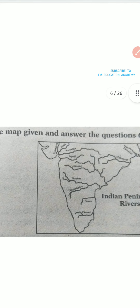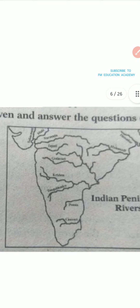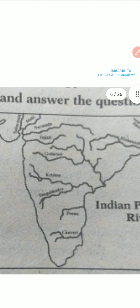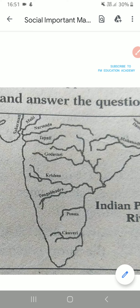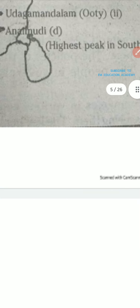Next, observe the given map and answer questions 6 and 7. See what rivers are given here — they are Narmada, Tapti, Godavari, Krishna, Tungabhadra, and then a river name starting with P, and then Kaveri.